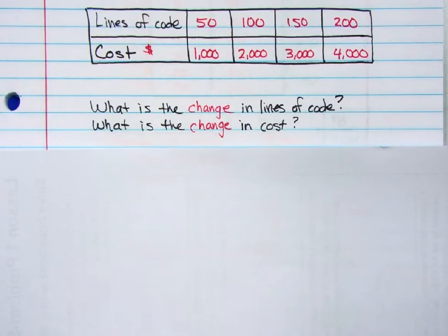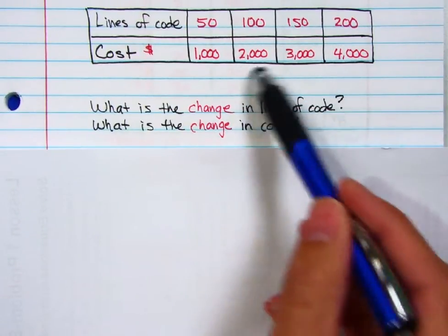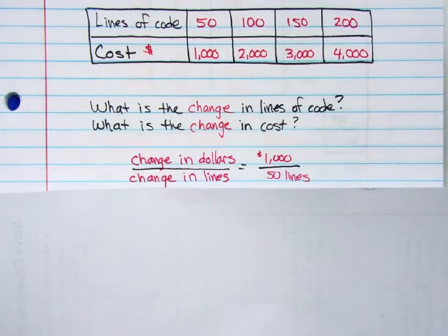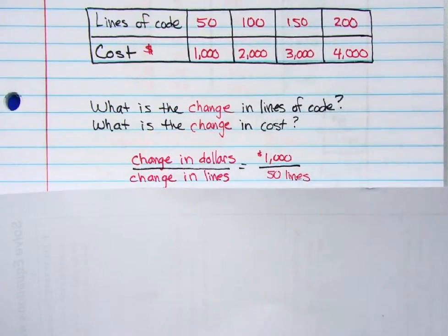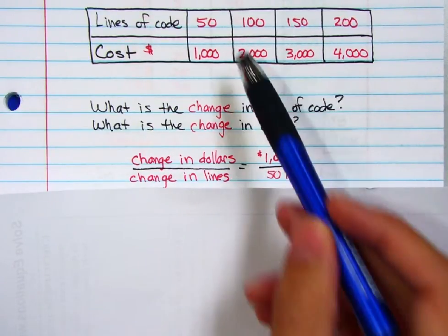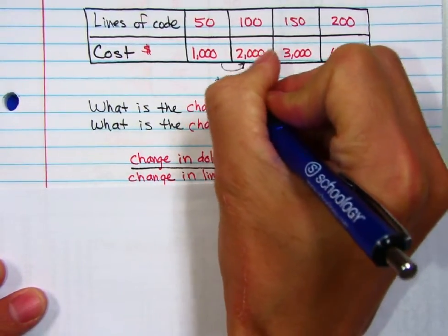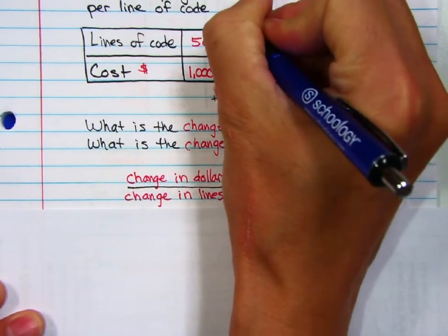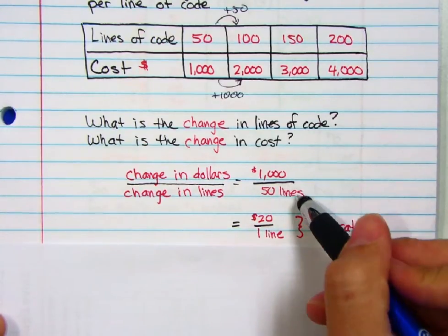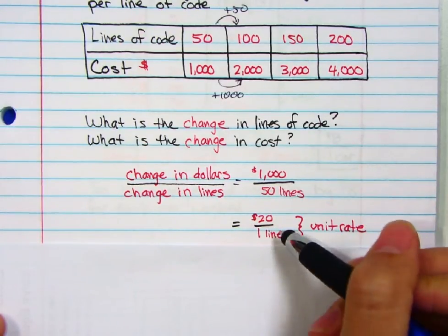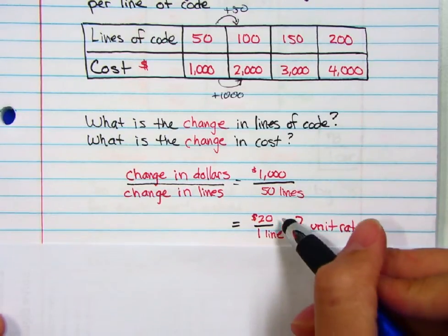The questions are: what's the change in the lines of code? How much is it changing each time in my table? And what is the change in cost? We can see here that the change in dollars is $1,000 — we're increasing by $1,000 each time. And the change in number of lines is 50. So while the cost is increasing by $1,000, the lines are increasing by 50. So $1,000 divided by 50 gives us our rate. This is a constant rate, and if I bring it down to a unit rate, it's $20 a line.